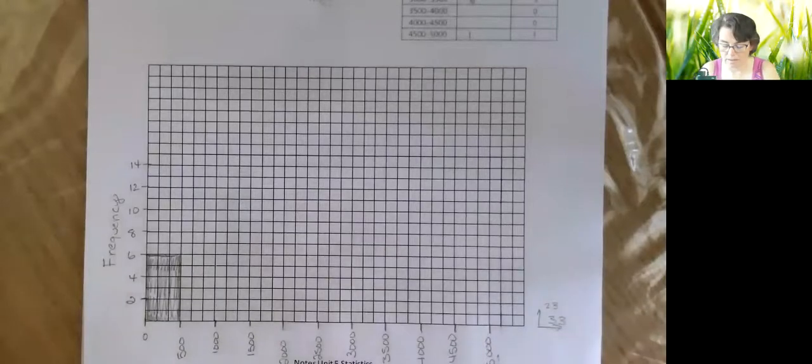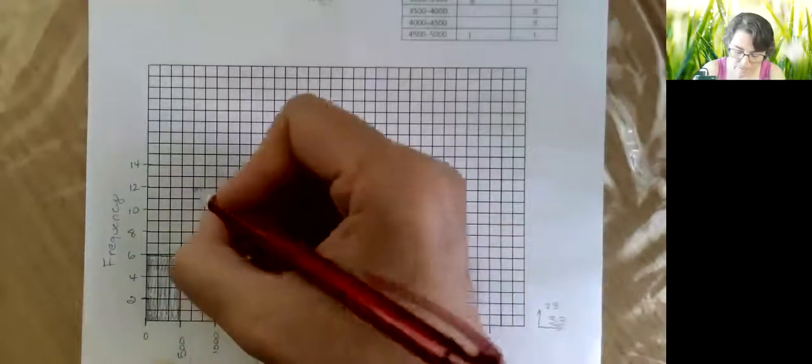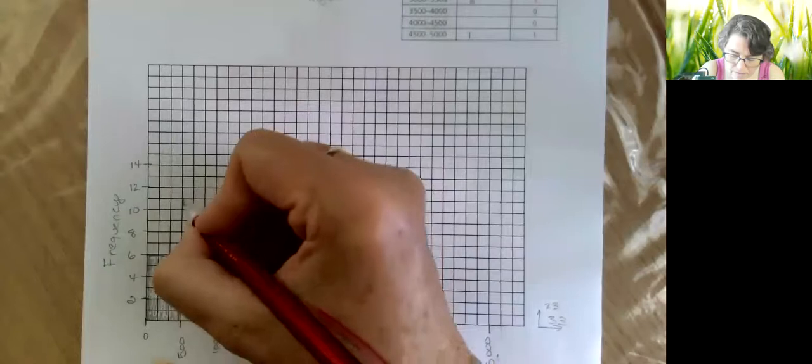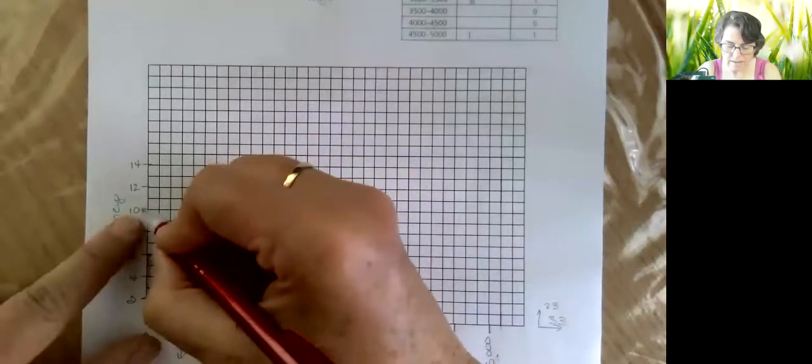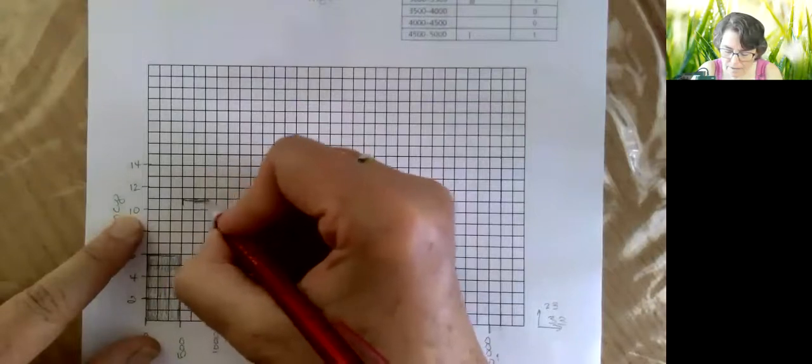Okay, now from 500 to 1000, I go back up to the chart. You guys can look, that happened 11 years. So I figure out where 11 is going to be, right, so there's 10 and 12, so 11 in the middle. And I'm going to color in this one.